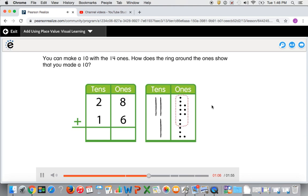How does the ring around the 1s show that you made a 10? It shows that you can take the 8 1s from 28 and 2 of the 1s from 16 to make a 10.